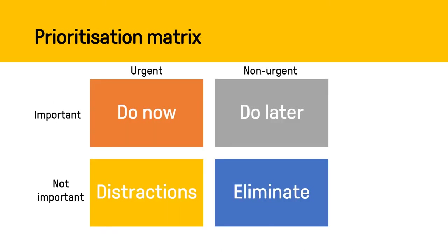One task you can undertake to help you prioritise is to fill in a matrix like this. This one was created by Dwight Eisenhower, President of the United States in the 1950s. For him it was very different — he had a lot of things to do but also a lot of people to delegate those tasks to. That was the idea behind this matrix: working out what other people could help him with.